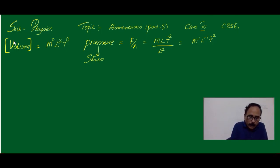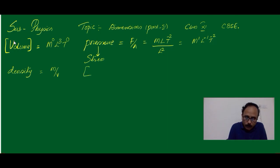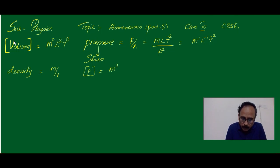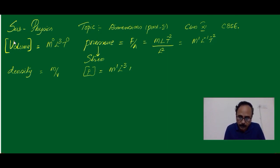Now, density. Density can be written as mass per unit volume. Therefore, the Dimensional Formula for density, which is represented by Rho, is M1, L-3, as the volume term is in the denominator, and T0.